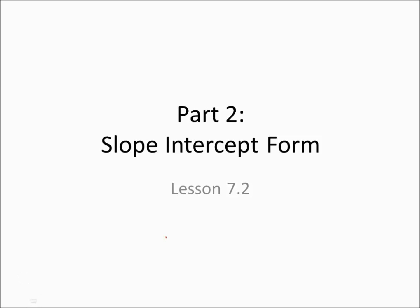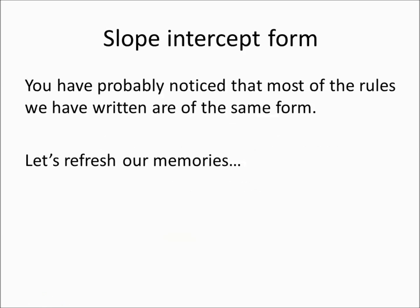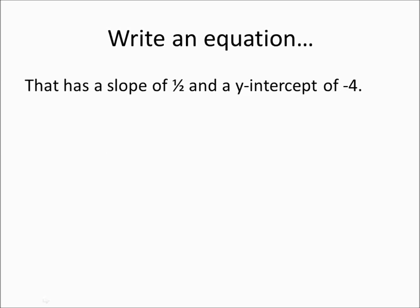So now what we're going to be doing is focusing on slope-intercept form, which is the y equals mx plus b. Most of the ones we've written were in that form. So just to kind of refresh our memories, let's see if we can do something very simple first. Write an equation that has a slope of 1/2 and a y-intercept of -4. Well, you should remember y equals mx plus b, where m is the slope and b is the y-intercept. So we'll simply go y equals 1/2 x plus -4, which is the same thing as minus 4.